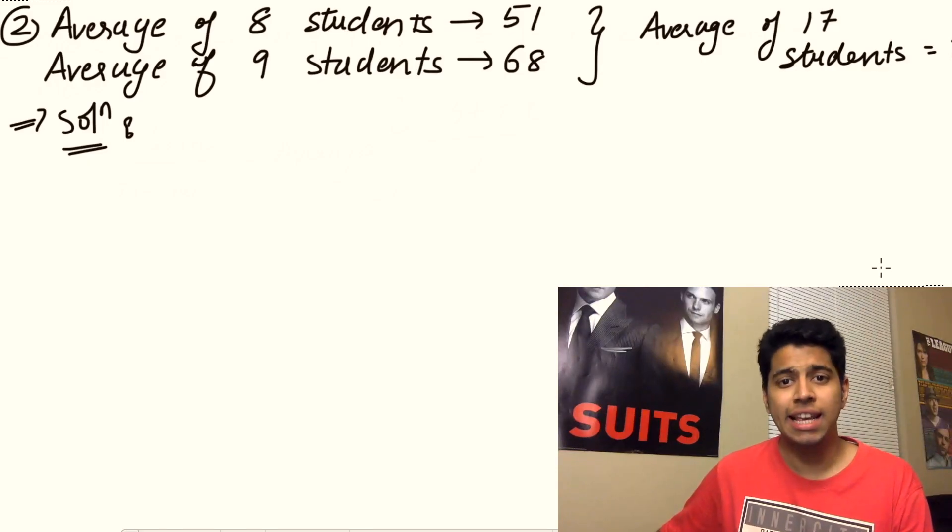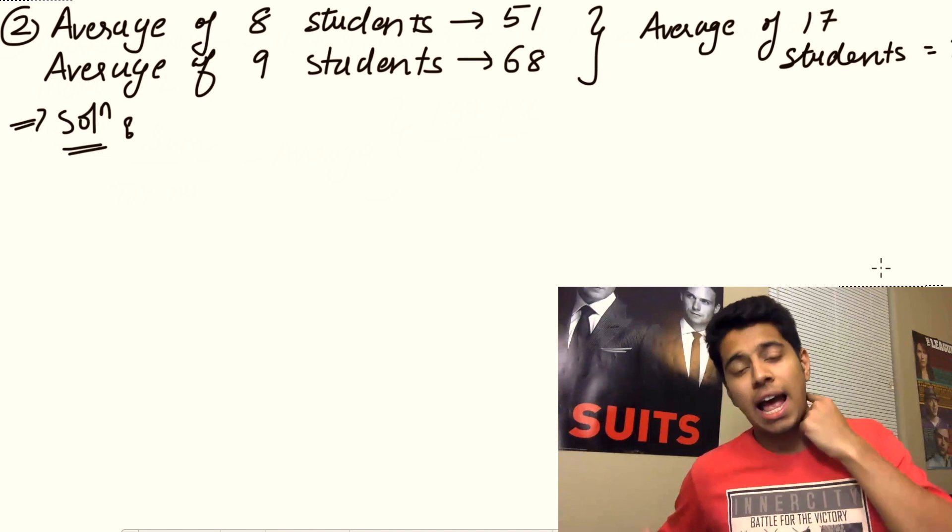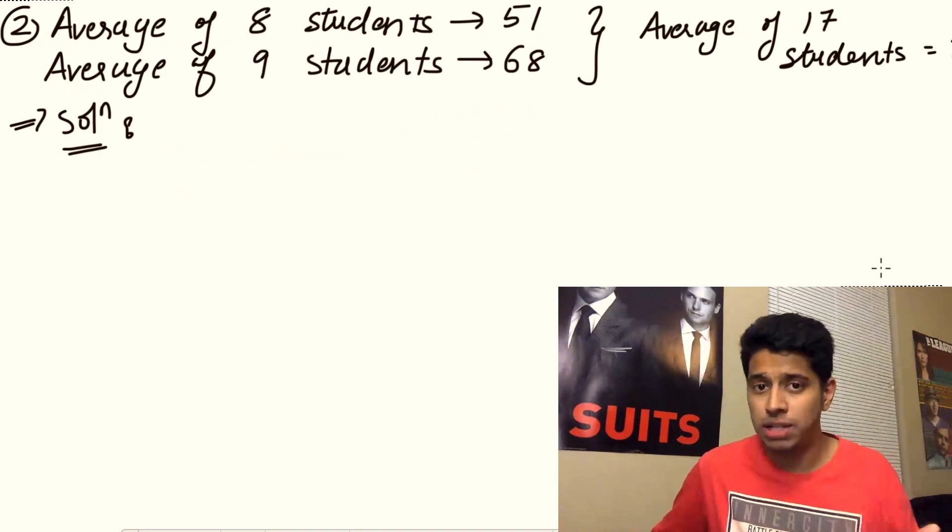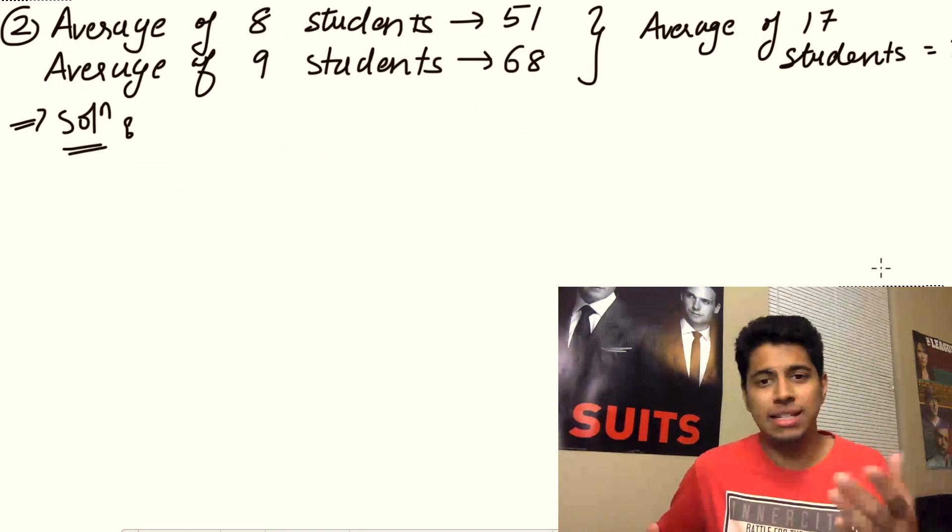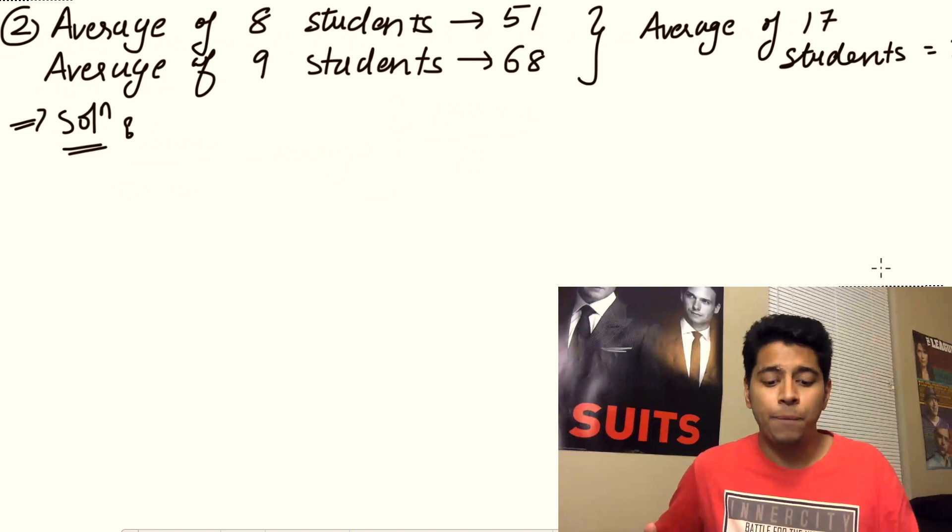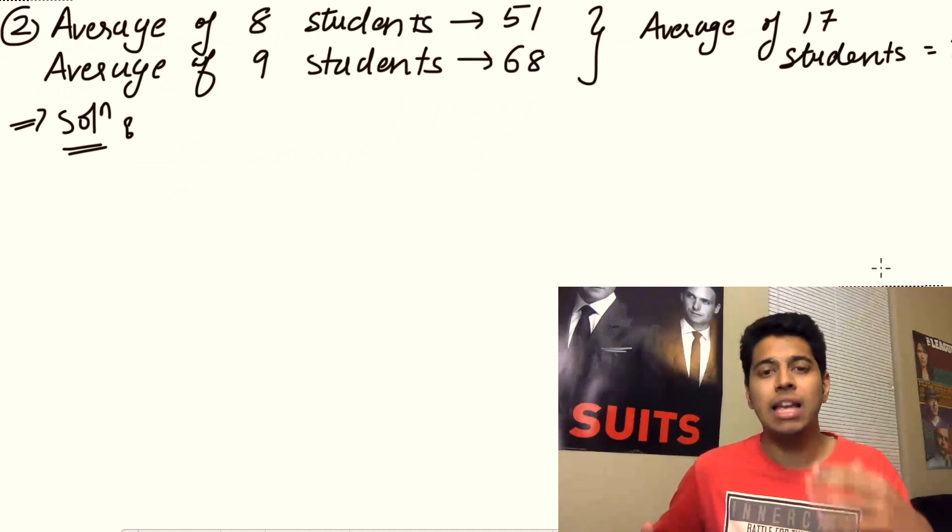For problem two, they're giving you the average of eight students as 51 and the average of nine students as 68. Now 8 plus 9 is 17, and they're asking you what is the average of 17 students. The worst mistake most students make is that they just add these numbers, so 51 plus 68 is 119, and they say that's the new average. That is completely wrong. Another mistake people make is that they take the average of 51 and 68. That is also wrong. You cannot just play that way with averages. You need to make sure of some things before you can do something like that, and that does not apply in this case. You can't take 51 plus 68 by 2 and say that's your answer, and definitely that will be one of the options.